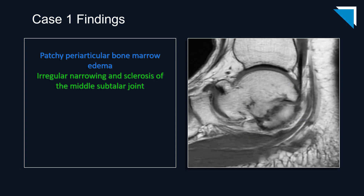It's a little more conspicuous on the sagittal non-fat saturated T1-weighted image. This is a case of tarsal coalition, which is not foremost in most of our minds when reviewing cases like this, but can be a cause of chronic pain. Let's talk a little bit about tarsal coalition.